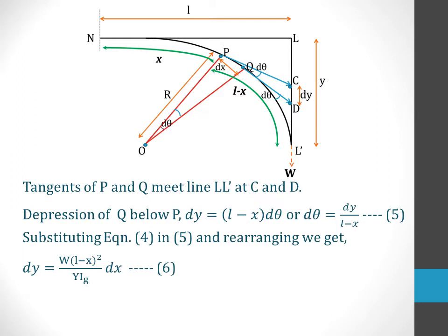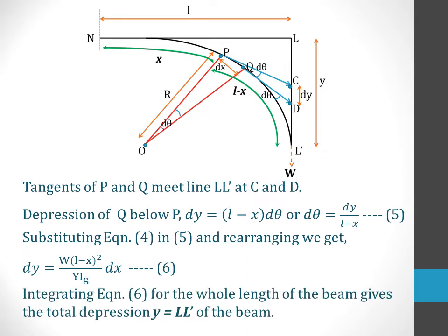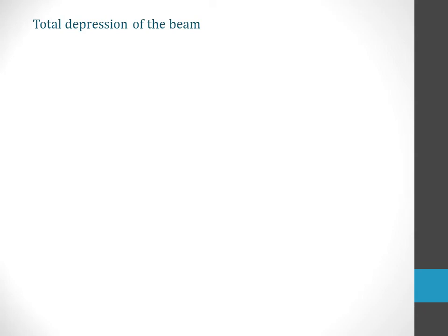Substituting equation 4 in equation 5 and rearranging, we obtain the elementary depression DY = W(L − X)² / (YIG) · DX, represented as equation 6. Integrating equation 6, we obtain the total depression which the cantilever beam NL undergoes, denoted by y.